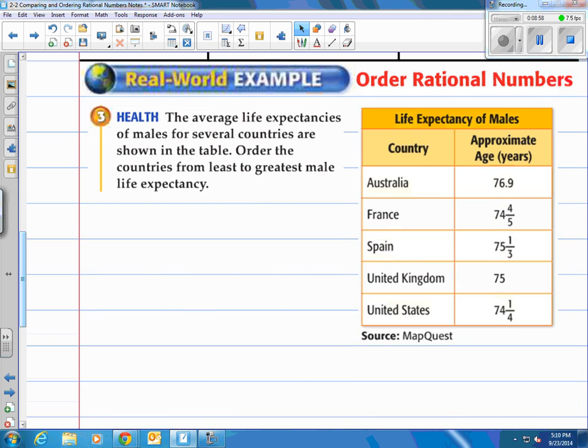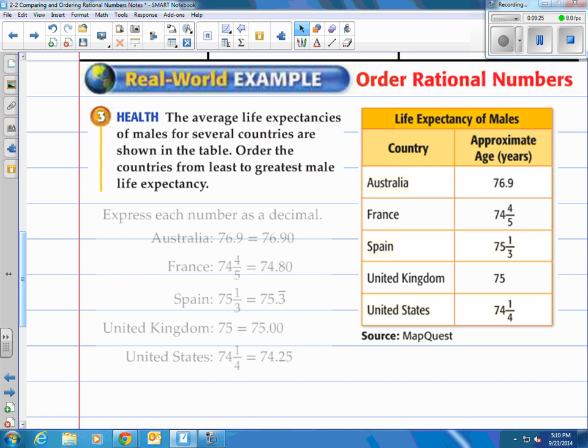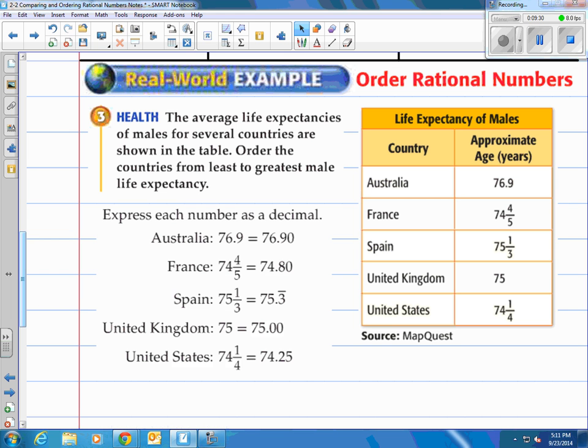All right. Let's take a look at the third example here. We talk about ordering rational numbers. It says the average life expectancy of males for several countries are shown in the table. Order the countries from least to greatest male life expectancy. Now, if you look over on the right there, they're all generally in the 70s. But some of them are written in decimal form. Some of them are written in mixed number form. So what are we going to do? Well, the book has you change these to decimals. Then you can compare the decimals. And once you look at the decimals, hopefully you can figure out which one's the smallest, which one's the greatest, and then organize those.